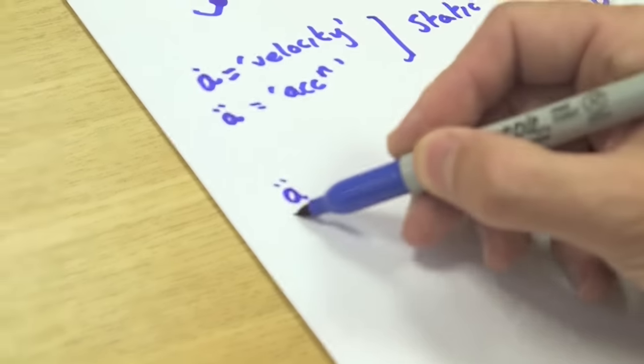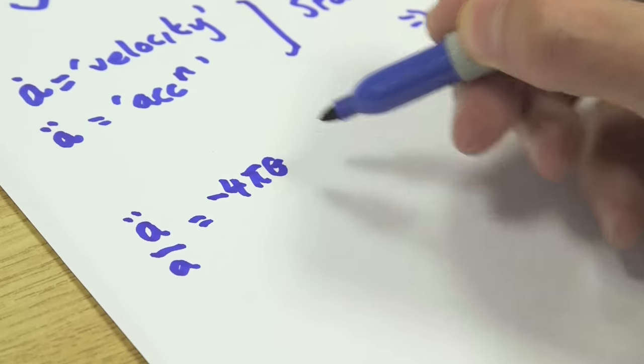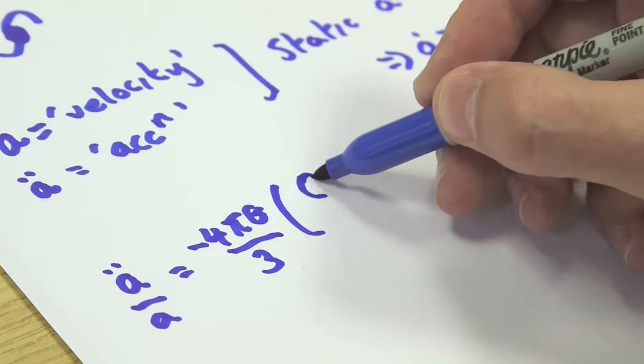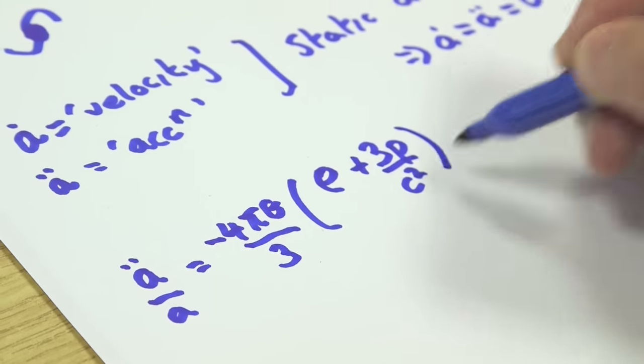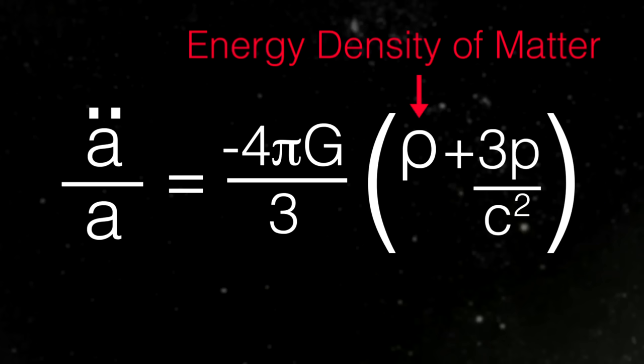There are two major equations from Einstein's theory of relativity that apply to cosmology. I'll write down the first, called the acceleration equation. It tells me a double dot divided by a, given in terms of Newton's constant. There's 4 pi g over 3, and then these two contributions. A term rho and another term p. Rho is the density of matter, the energy density of matter.